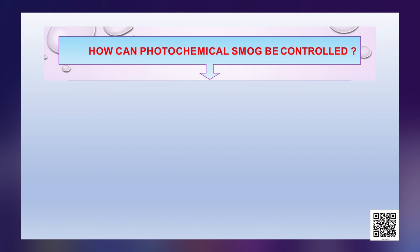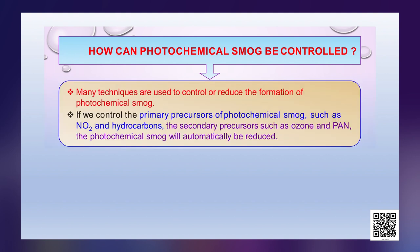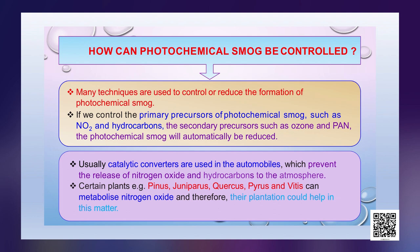How can photochemical smog be controlled? Many techniques are used to reduce its formation. If we control the primary precursors such as nitrogen dioxide and hydrocarbons, the secondary precursors such as ozone and PAN will be automatically reduced. Catalytic converters are used in automobiles to prevent the release of nitrogen oxide and hydrocarbons into the atmosphere. Certain plants such as Pinus, Juniperus, Quercus, Pyrus and Vitis can metabolize nitrogen oxide, and therefore their plantation could help in this matter.